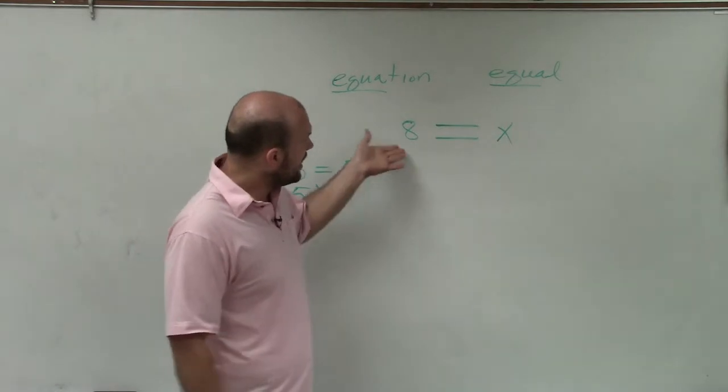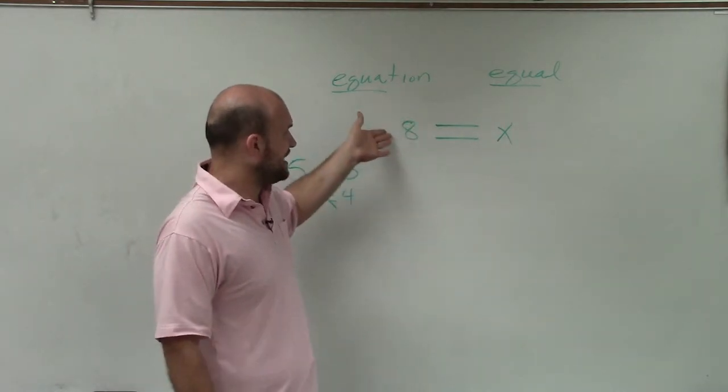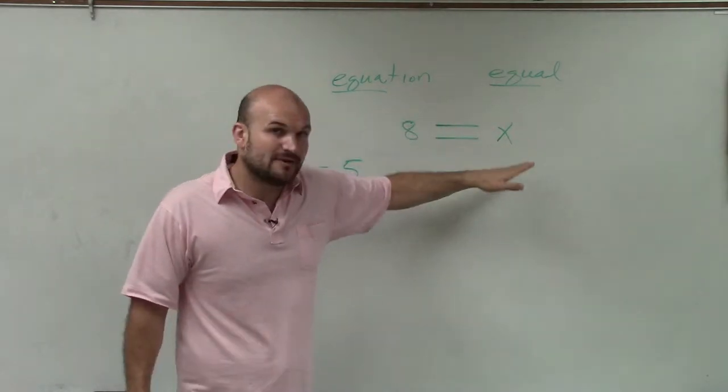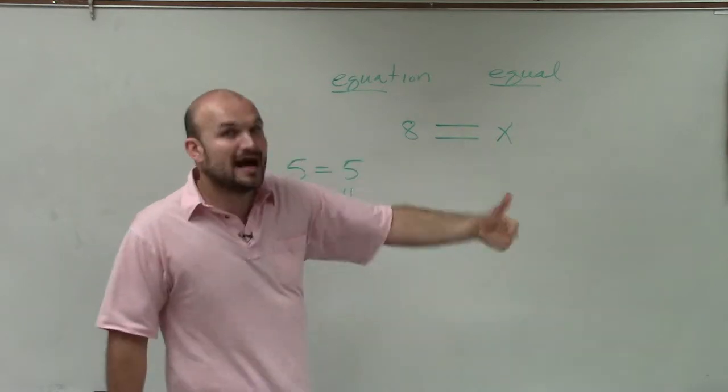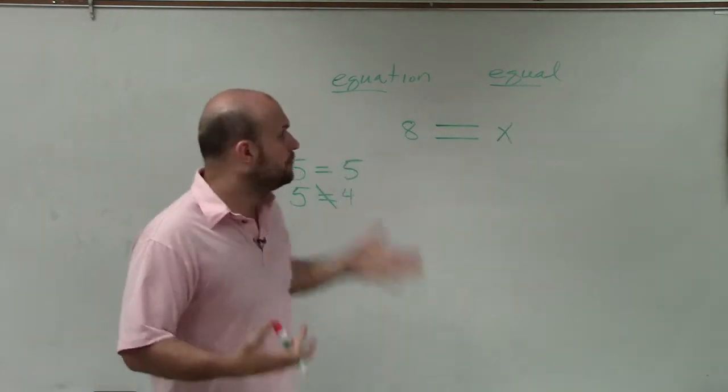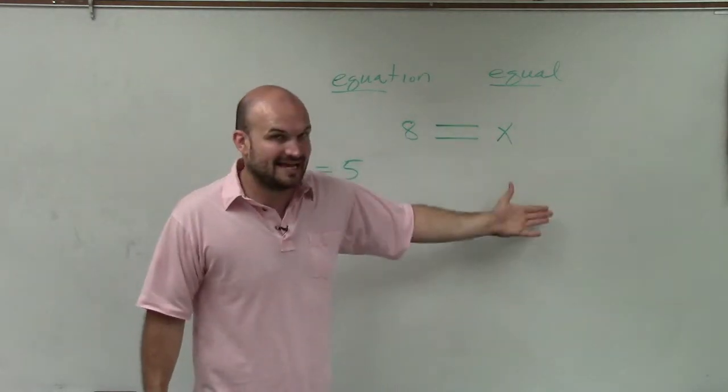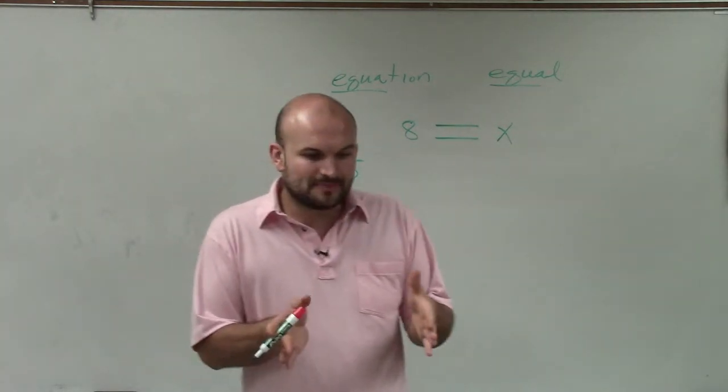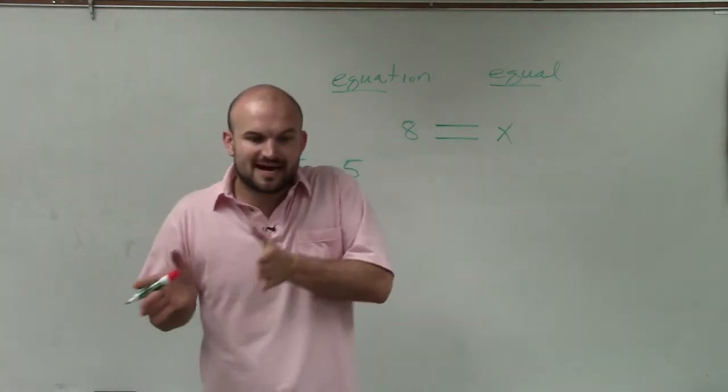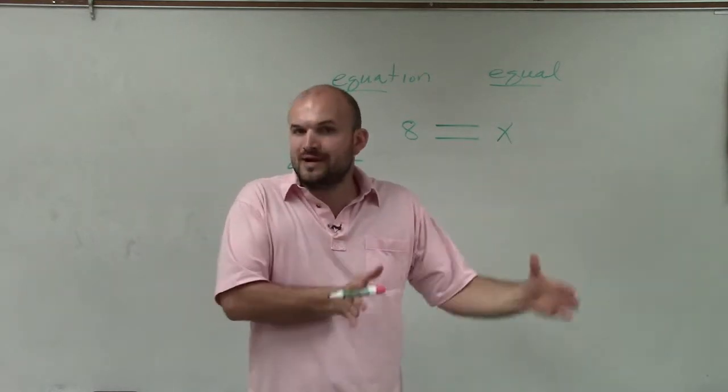And however, when we look at this, we say eight is on the left side. Therefore, eight would have to be on the right side. So therefore, the value of our x, our variable, our unknown, we know is going to be equal to eight. So an equal sign is just representing that our left side is going to be equal in value to our right side.